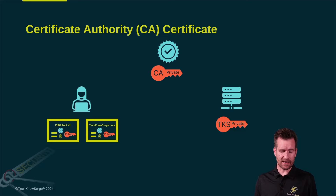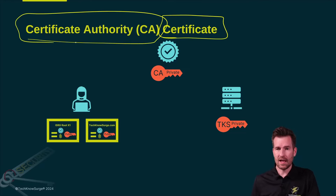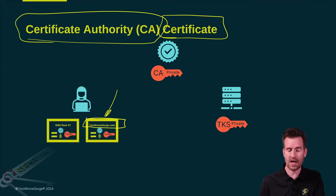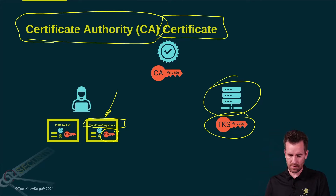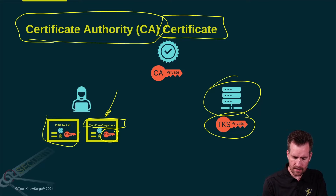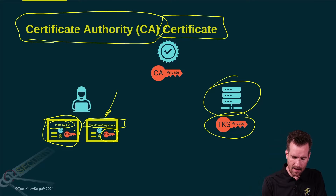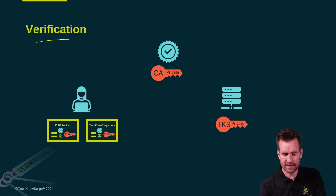There is another certificate involved here — the one from the certificate authority. We have a certificate from technosurge.com that has the public key that aligns with the private key of the technosurge.com servers. But there's another certificate that's already on your computer, coming from some sort of root certificate authority, that has a public key that aligns with a private key of a certificate authority. So how do we go through this verification? There are two things that we need to verify in this process.